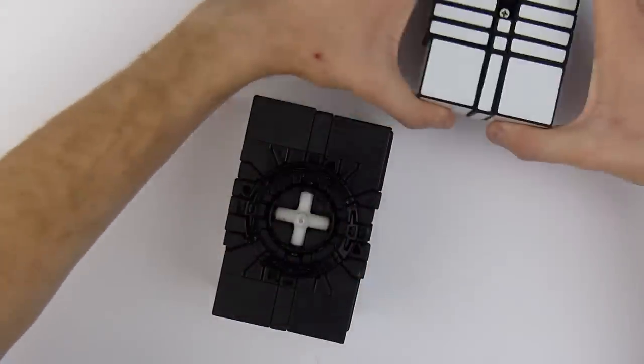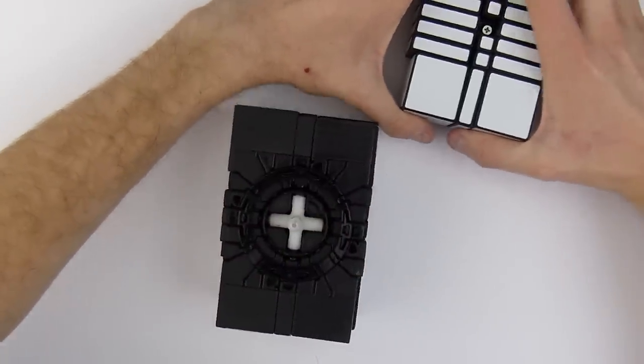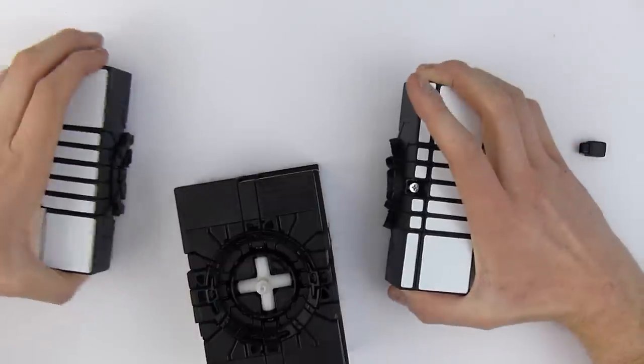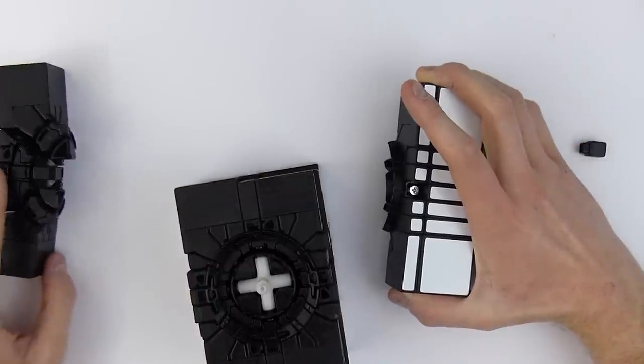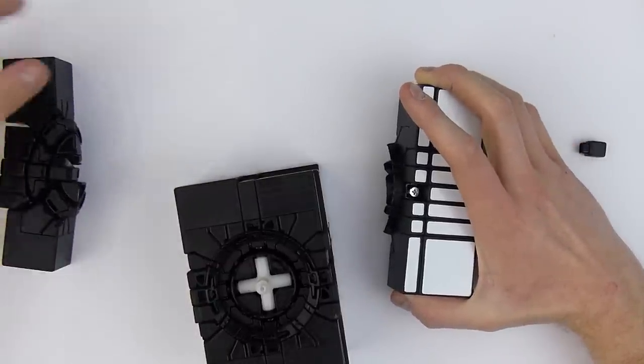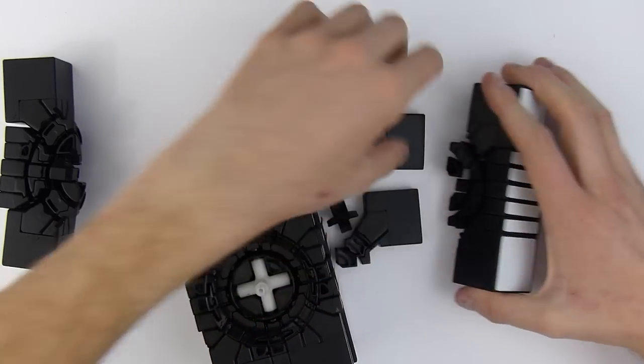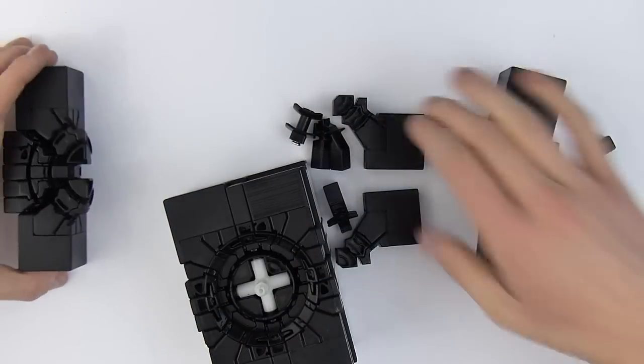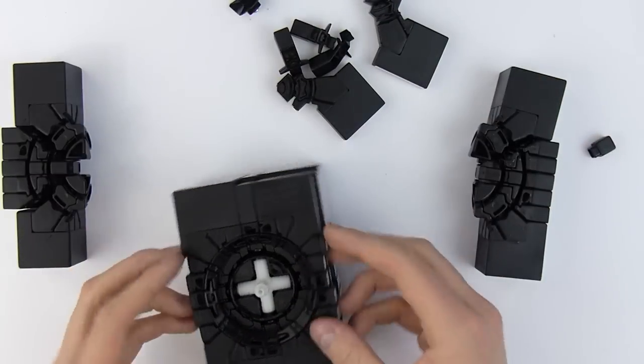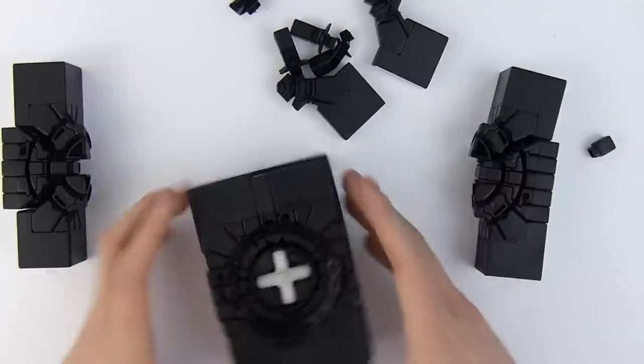So let's take this screw out and see how it goes. So this is a 7x7 shape mod. That was easier than I expected. So I guess that would be a Shengshu 7x7. I'm not an expert on 7x7 brands. Wow, this is really interesting. I love that mechanism. It's very impressive.